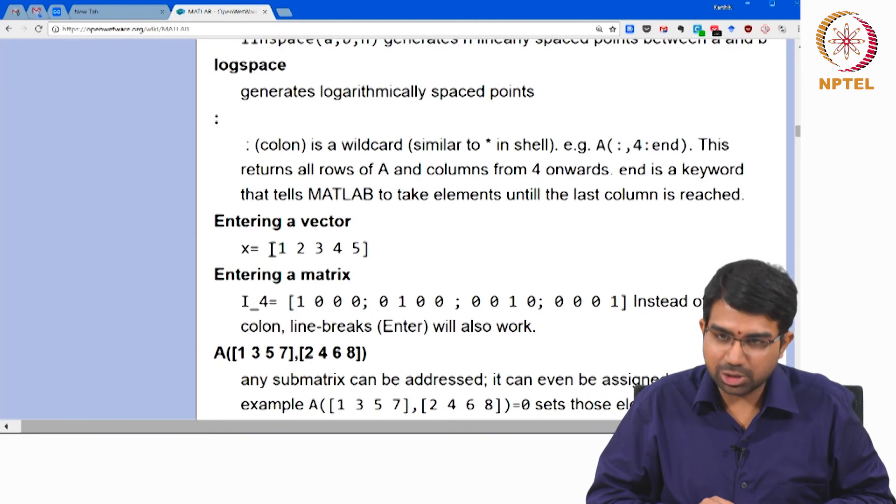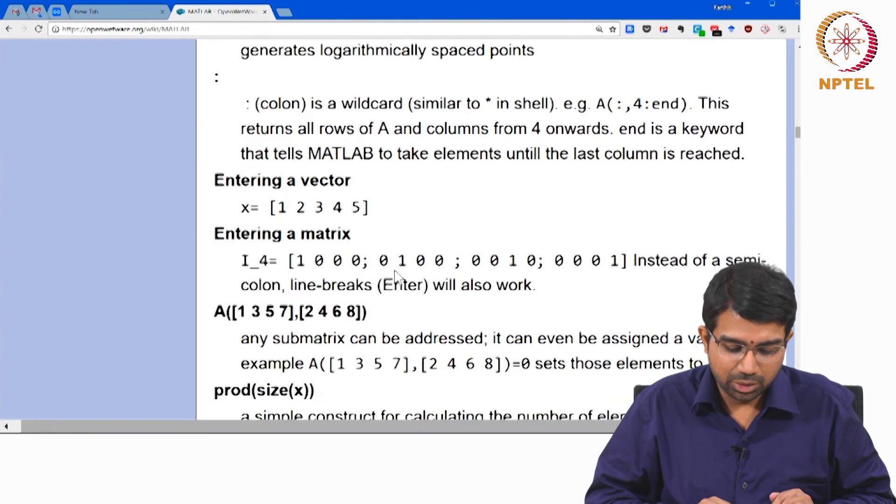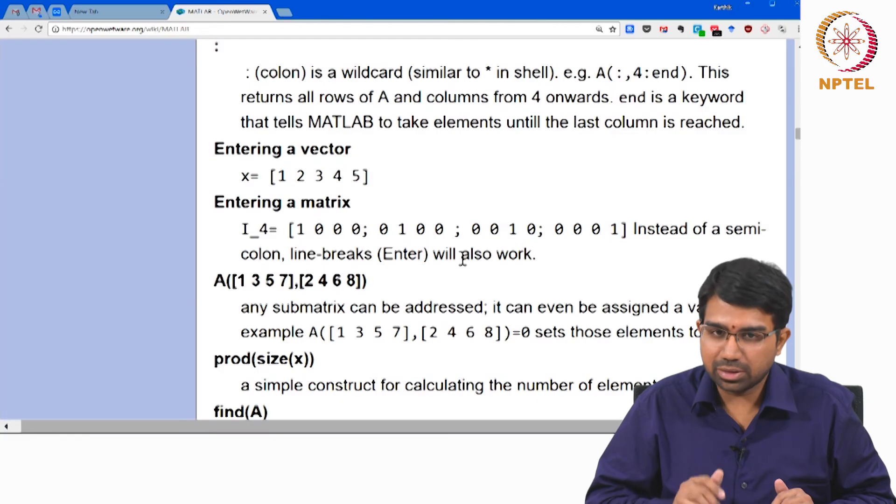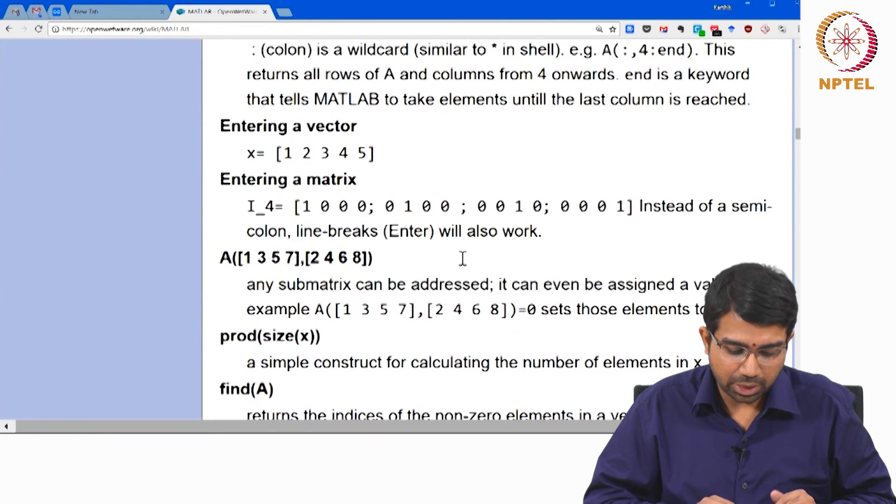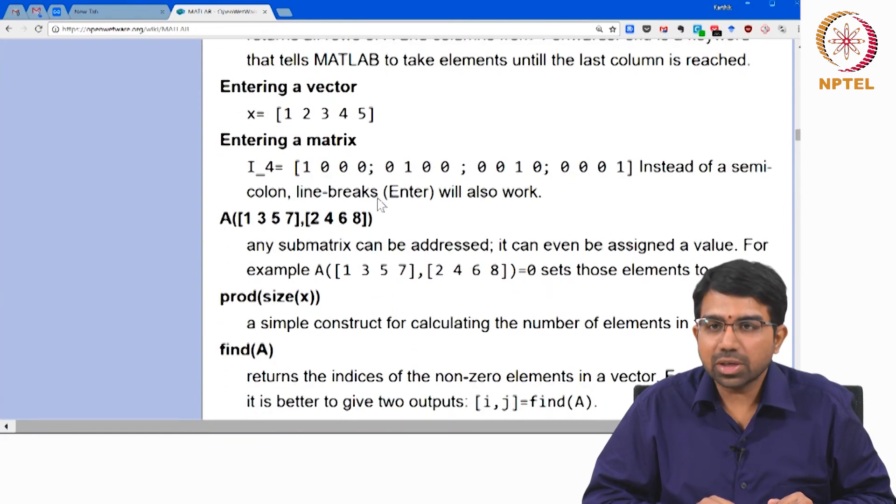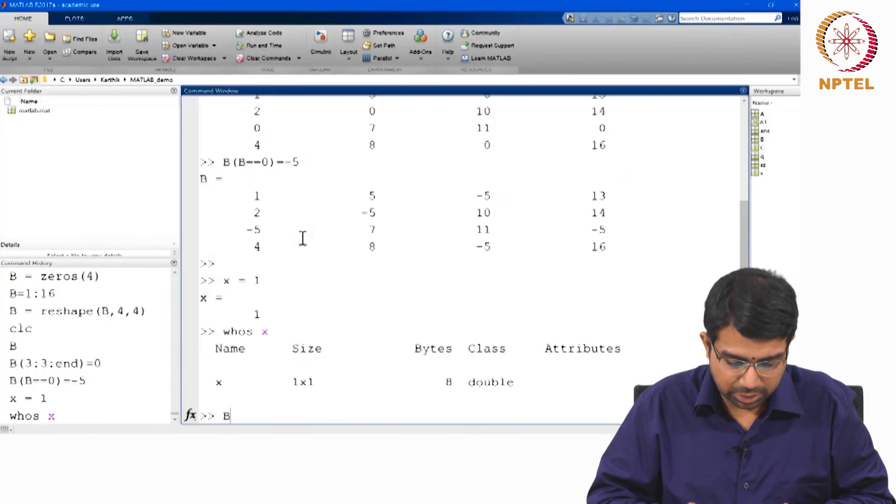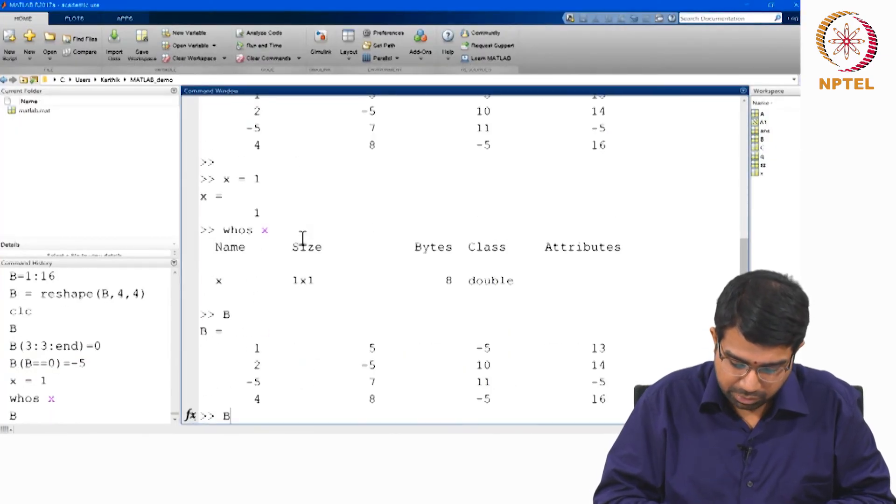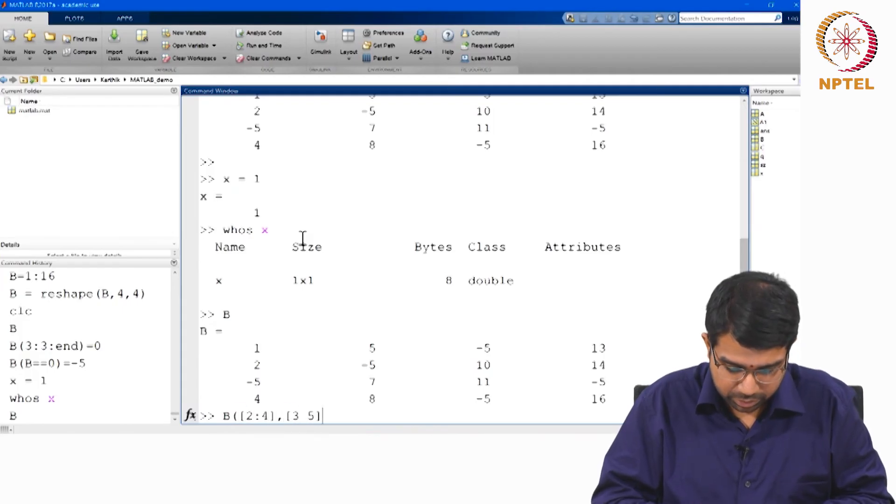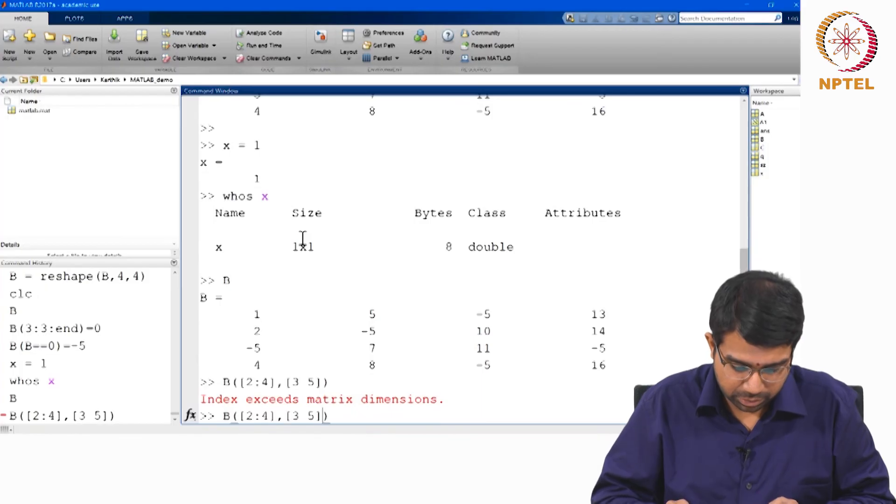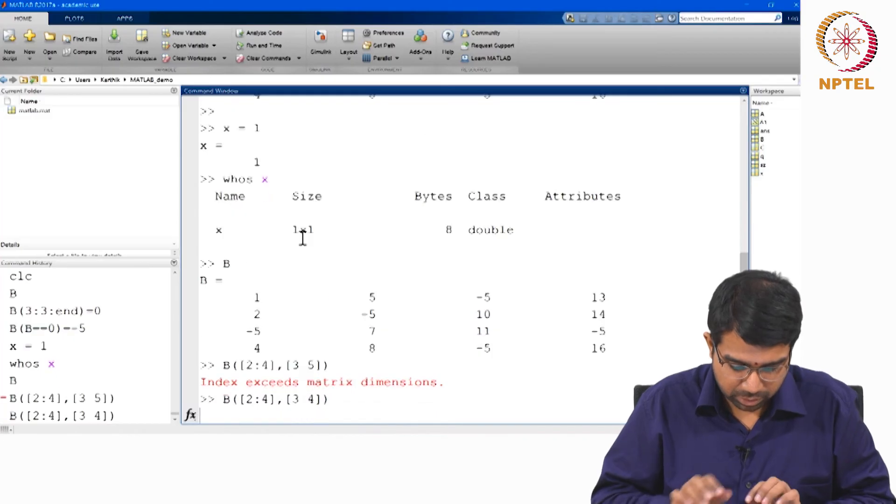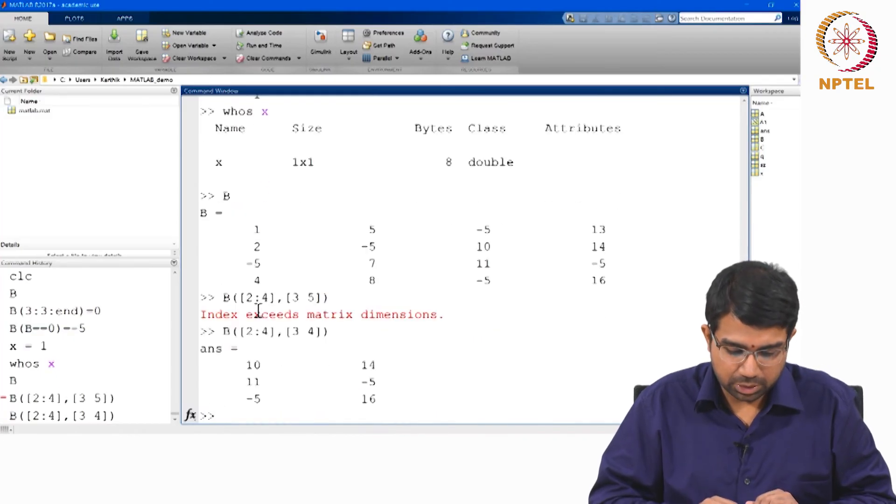So how do you enter a matrix? You can just use square brackets and keep entering. You can put either semicolon or column breaks or enter to give line breaks and you can do any kind of submatrix indexing. So let us just say B, so I can say B.